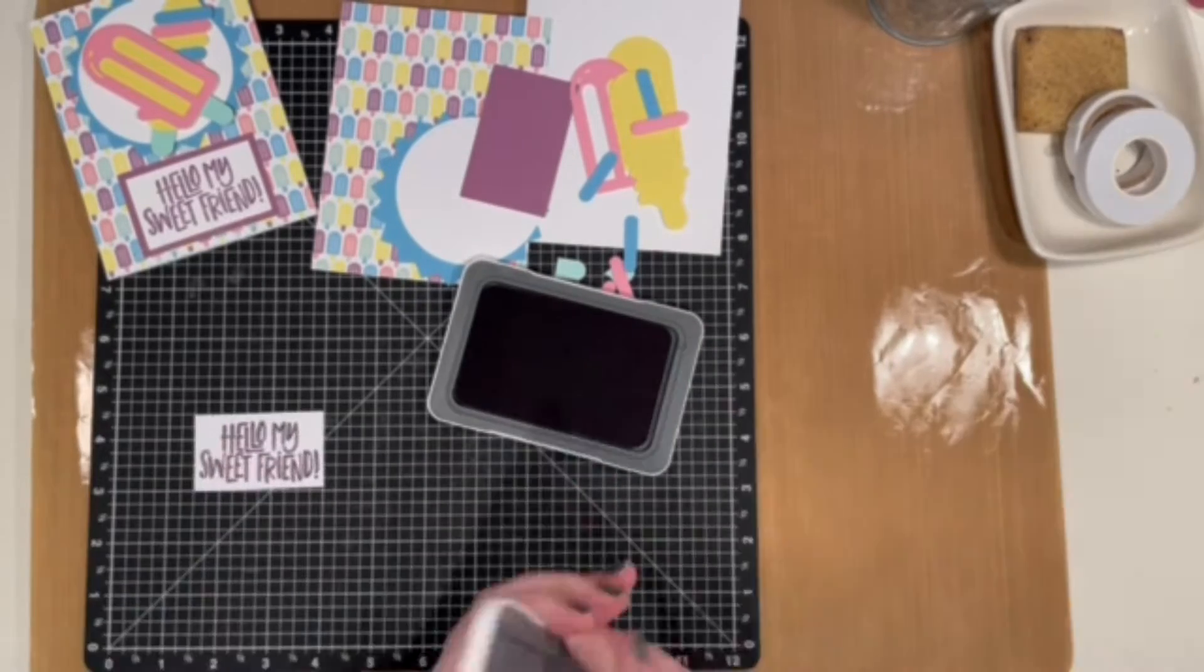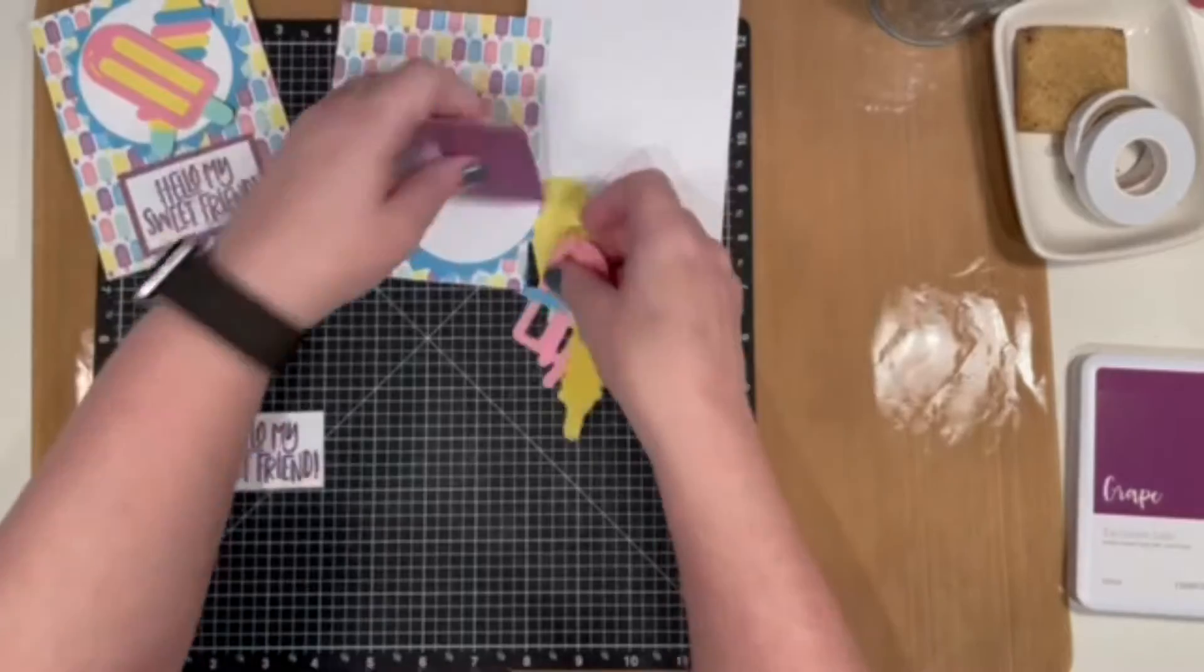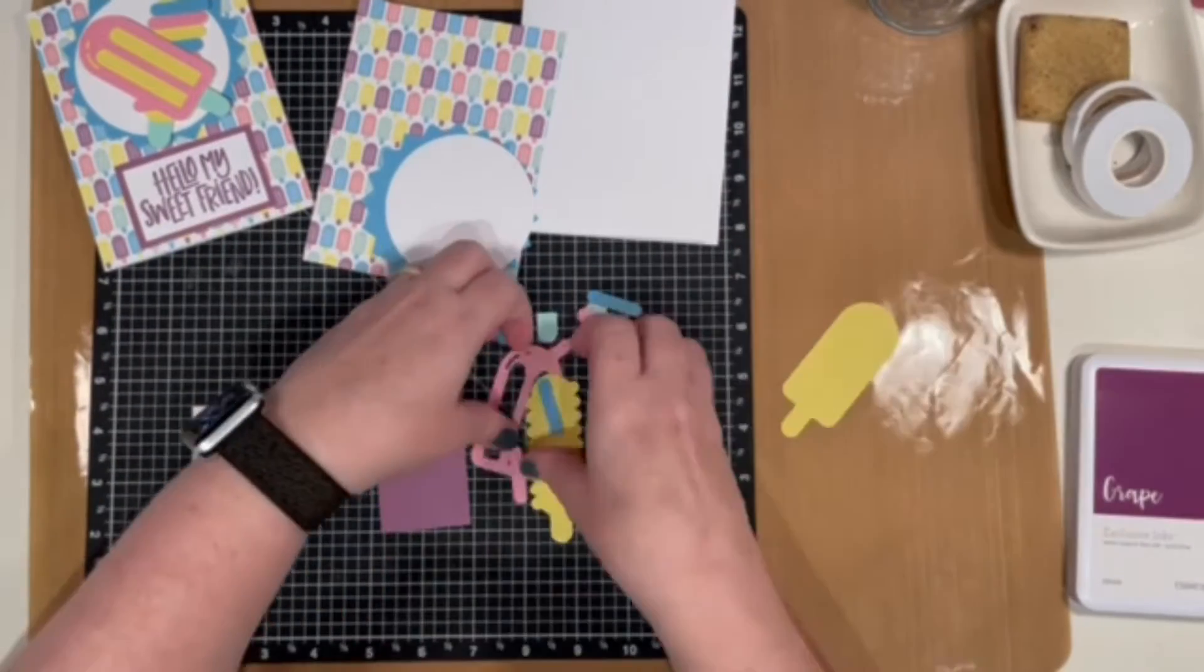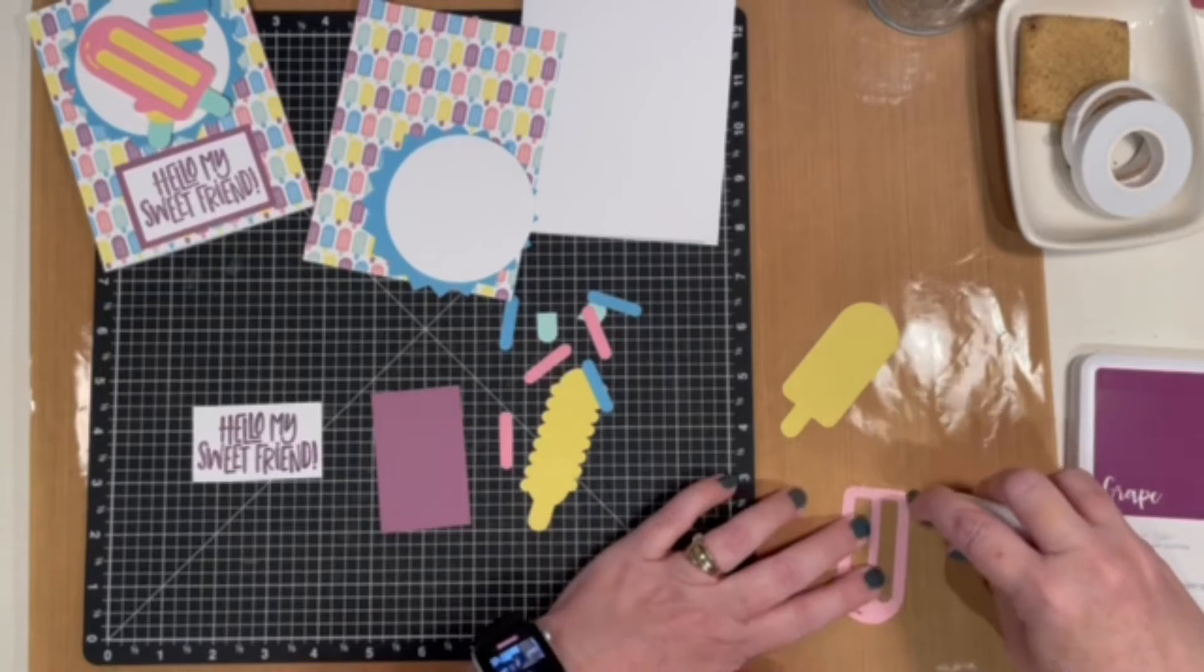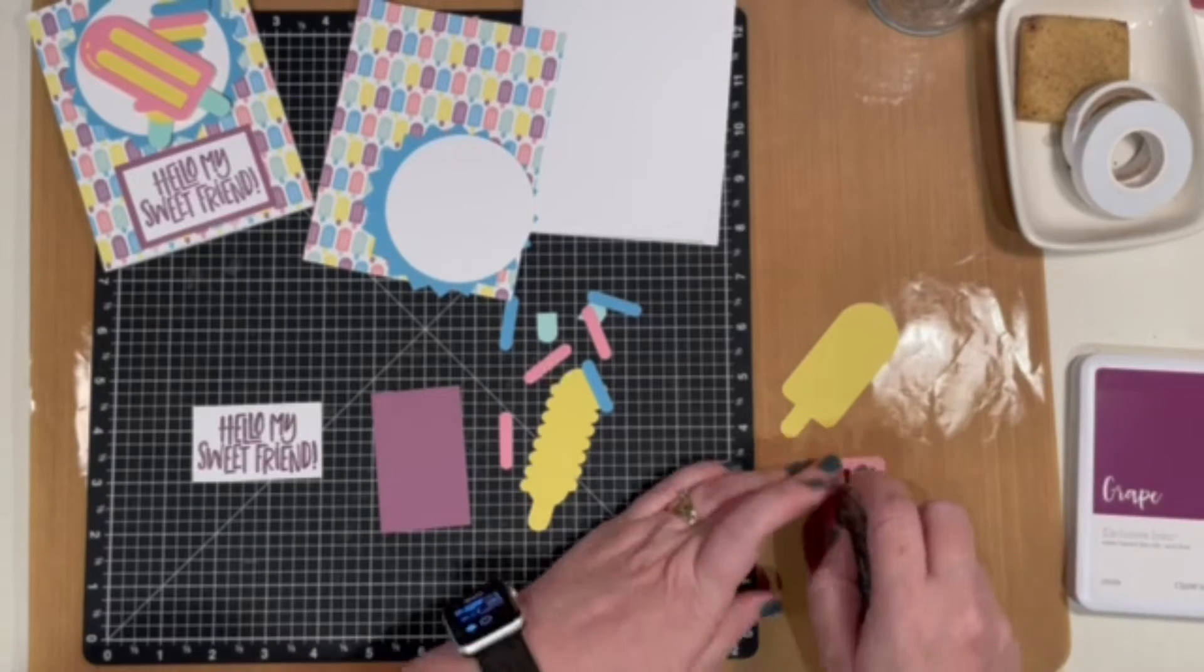The sentiment is from the Million Reasons stamp set. The popsicles are cut using the Tutti Frutti digital images.